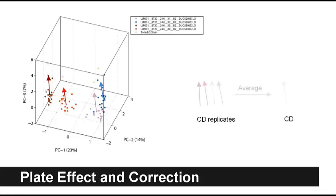Q: Is it just quantile-normalized observations? A: Yes, these are quantile-normalized data. We started from level 3 normalized data and then derive our own signatures — nothing related to the Broad's z-score signatures.